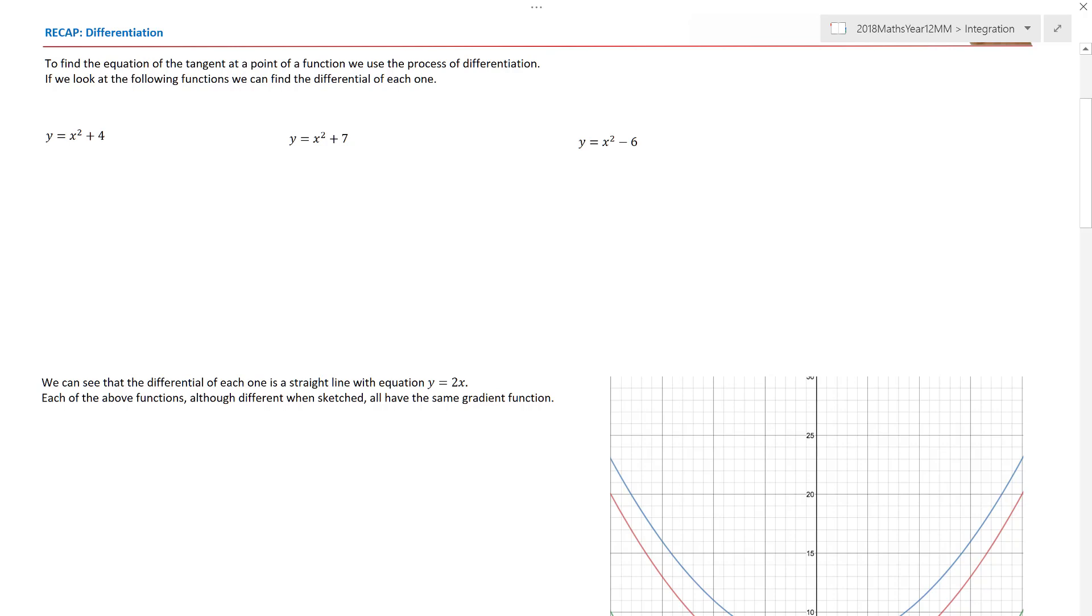So if we look at a few of the different functions, I've got three for you here. y equals x squared plus four. So that one becomes y dashed is equal to 2x. Remember, constants disappear when we differentiate. This one here also has y equals 2x. That constant disappears. And likewise, y dashed here is also equal to 2x.